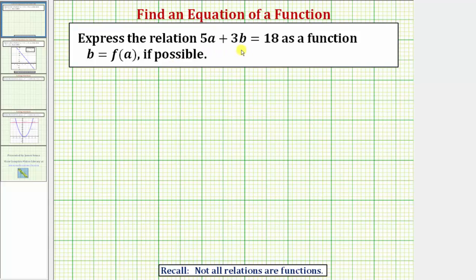We're asked to express the relation 5a plus 3b equals 18 as a function b equals f of a if possible. It says if possible because remember, not all relations are functions.